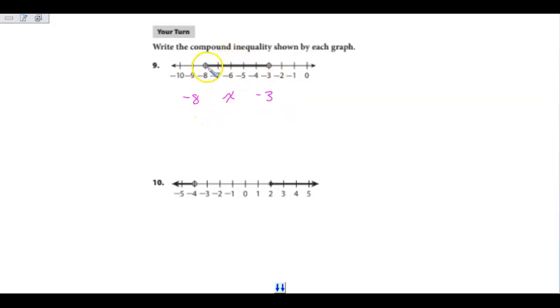Because it's an open circle, it's telling me it's not equal to, but X can be larger than negative 8, so it's going to be larger, so it's open to the X. And for this one, it's open, so it's not going to be OR equal to, and it's all the numbers less than negative 3. And there's my answer.